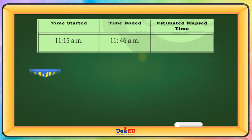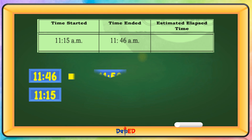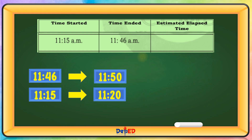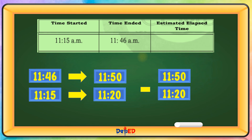From 11:15 to 11:46 — round off to the nearest tens: 11:46 becomes 11:50, and 11:15 becomes 11:20. Then, 11:50 minus 11:20 equals 30 minutes.